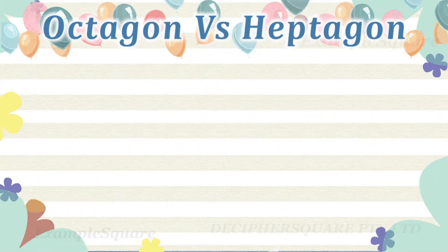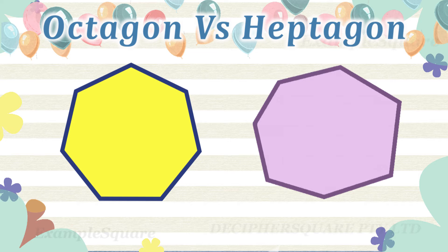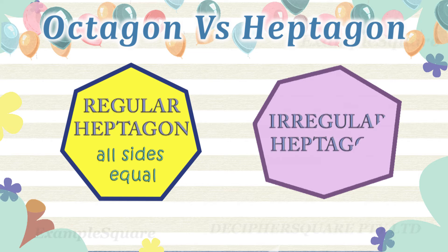If all the seven sides of the heptagon are equal and all the seven interior angles of the heptagon are equal, then it is a regular heptagon. Otherwise, it is an irregular heptagon. Here is an example of a regular and irregular heptagon.